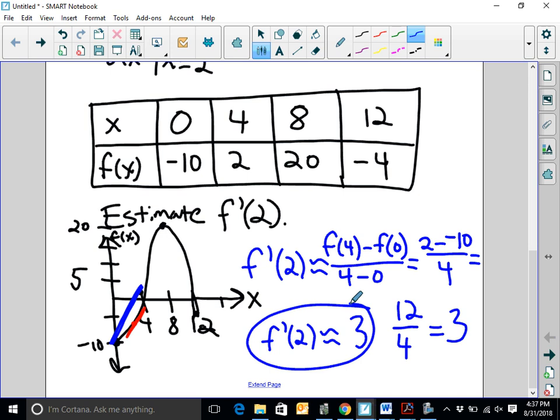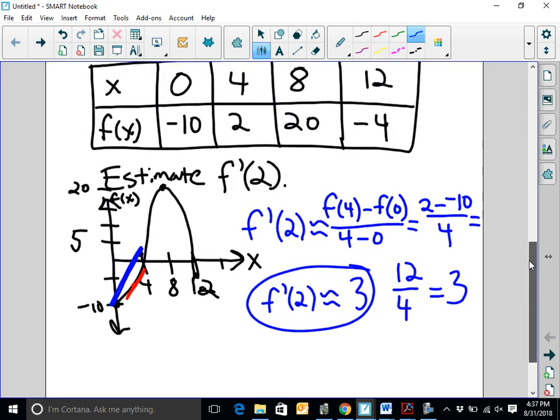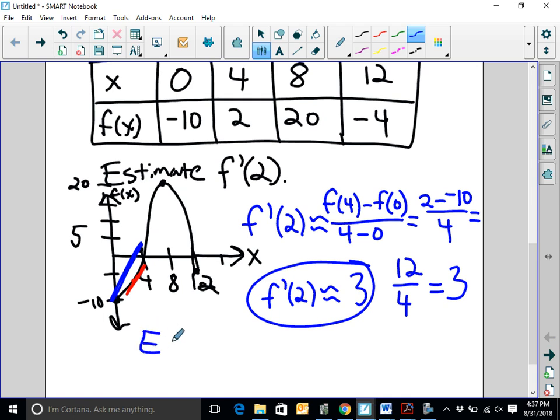Using the same data table, we're going to keep this video short today. I want you to approximate f prime of 6. Go ahead and pause the video here. I want you to estimate f prime of 6. When you've done this, make sure you have everything included that you need to include. Check back with me and the final answer here. Okay, we're back. Once again, 6 isn't in our table. But we know that 6 is between 4 and 8. So we're going to use the points 4, 2 and 8, 20 to estimate f prime of 6. Here's what it's going to look like.